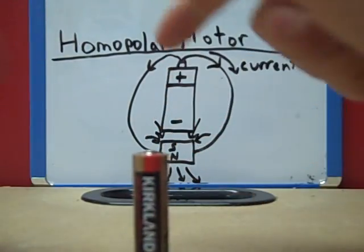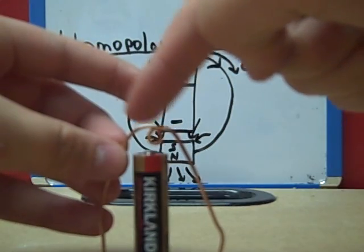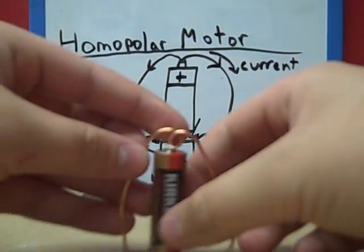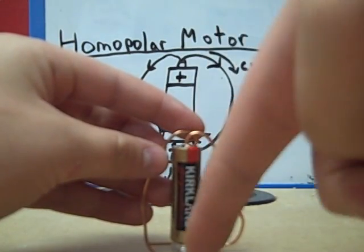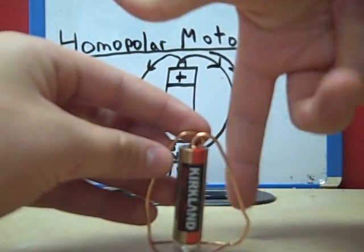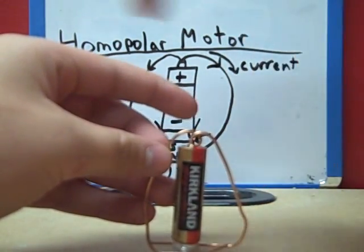So with this, we have our current moving this way around, our magnetic field is going this way, so that would look like this. Therefore, our force would be this way, so it would be clockwise.